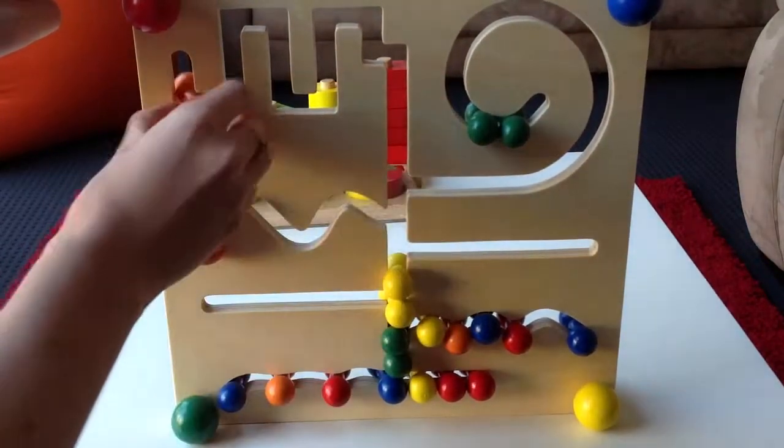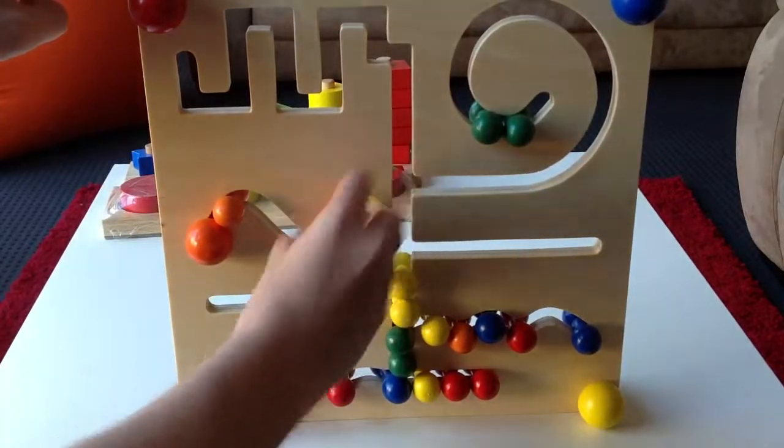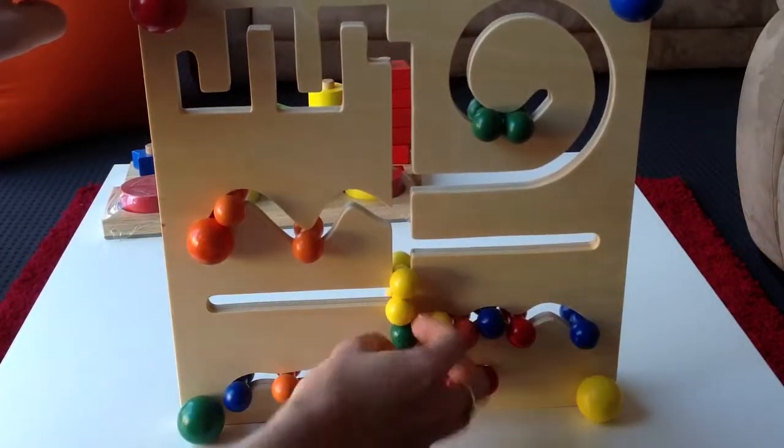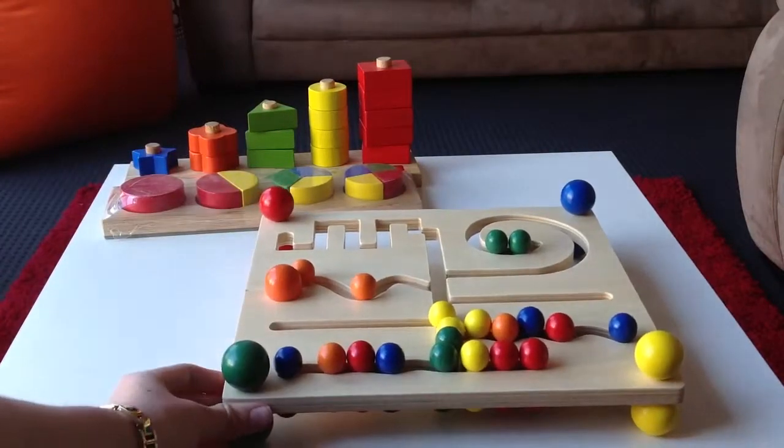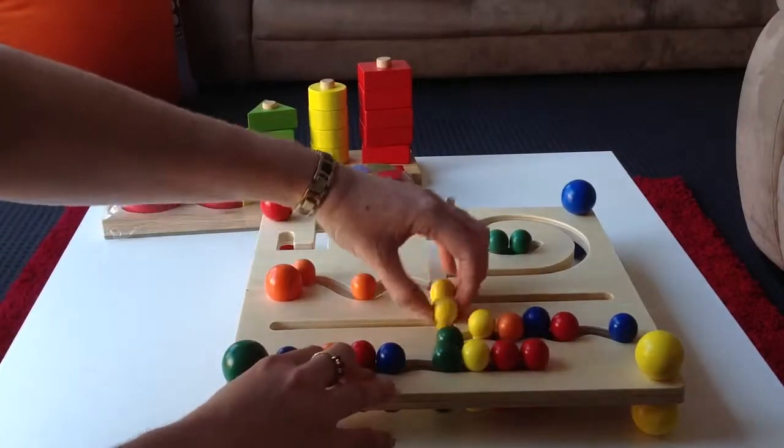This will take quite a while. There you go. Yellow's down here, so you've got to move all them. The great thing about this is that it can sit flat on a table and still move around. So that's probably going to be easier.